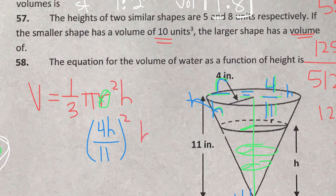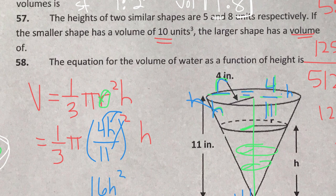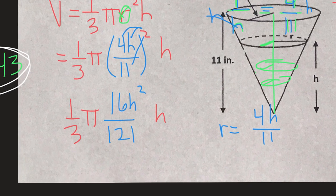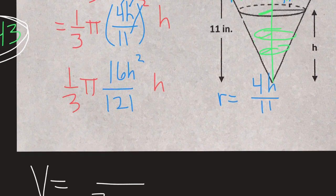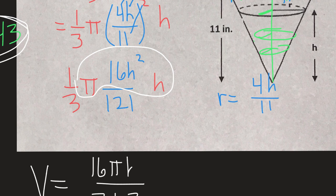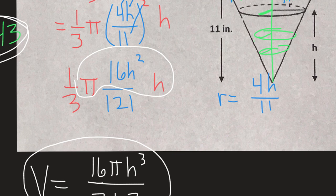Now we're going to square: we square the h, we square the 4, we square the 11, giving us 16h squared over 121. We have pi, one third, and h on the outside. The last step is to multiply denominators — 3 times 121 is 363. On top: pi and 16h and h squared, so that's 16 pi h cubed. There's nothing that can simplify here, so the final answer is V equals 16 pi h cubed over 363 — volume as a function of its height.